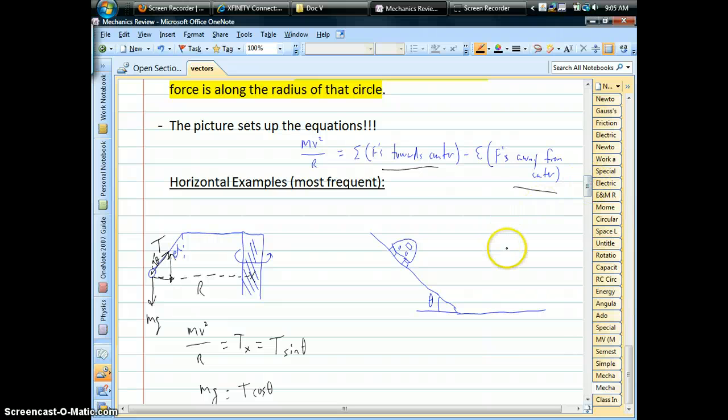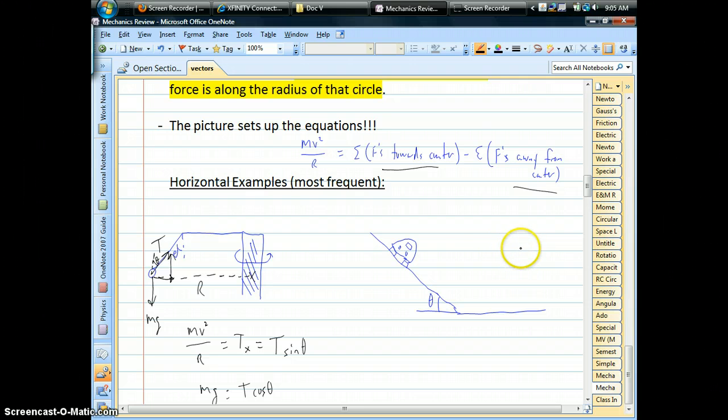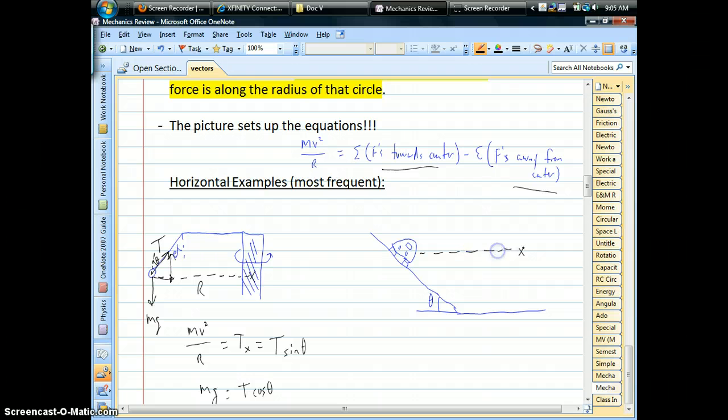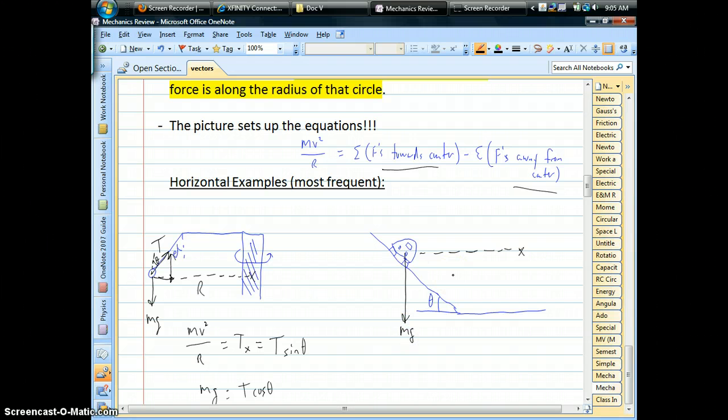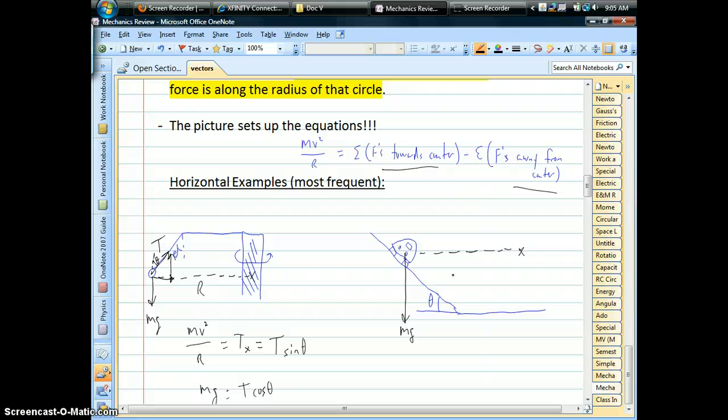Now for the car on the bank track, and you must love my picture, I'm sure. The center of the circle is over here somewhere. So here's a radius line. And our force diagram, and we can do this without friction even. We have always gravity. Now notice that gravity is perpendicular to that horizontal line. So gravity cannot be part of our centripetal force.